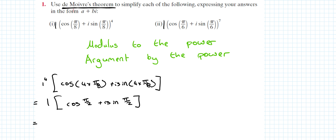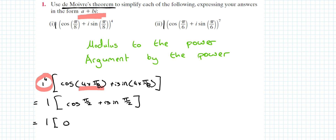Using De Moivre's Theorem to simplify and leave answers in a + bi form: there's no modulus out the front, so the modulus is 1 to the power of 4. Argument times the power: 4 × π/8 = π/2. So cos(π/2) = 0, and sin(π/2) = 1, giving 0 + 1i as the answer.